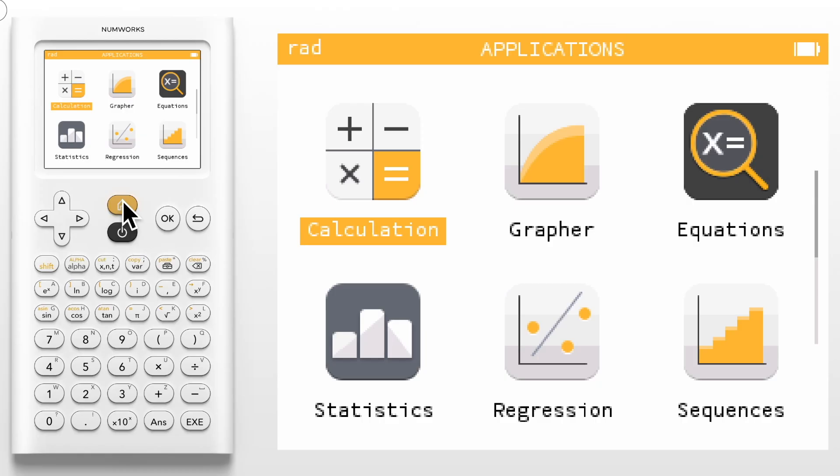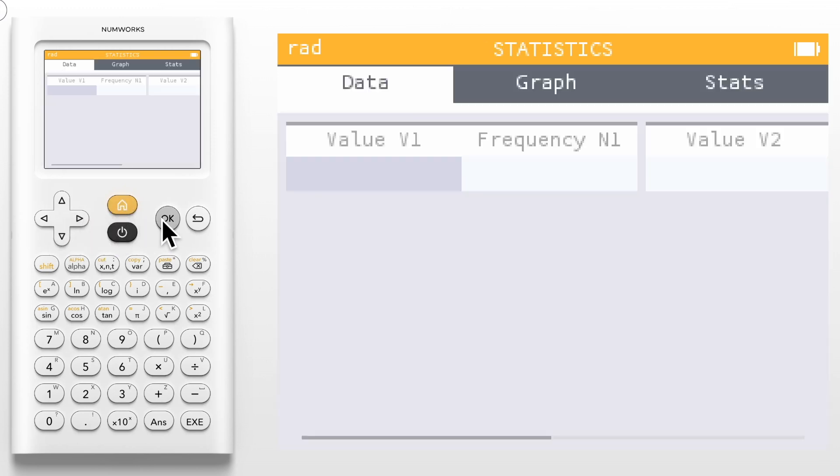We'll navigate to our first application, statistics, using the arrow keys. To open the application click OK. Notice that there are three tabs at the top of the screen. The first tab, data, is where we enter our data. We can enter up to three data sets. For each data set we have a column for our values and a column for our frequencies. Let's add some values into the V1 and N1 columns.